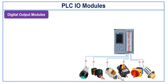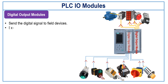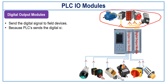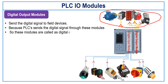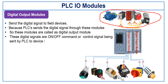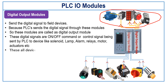Digital output modules: The digital output modules send the digital signal to the field devices. Since the PLC sends the digital signal through these modules, they are called digital output modules. These digital signals are basically on or off commands or control signals being sent by the PLC to devices like solenoid, lamp, alarm, relay, motors, and actuators. These all devices can be connected to the digital output modules.